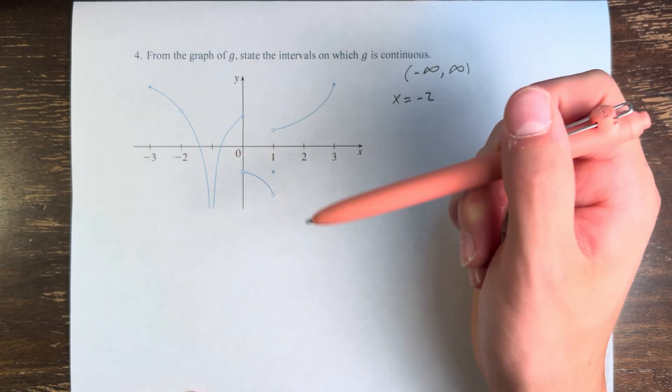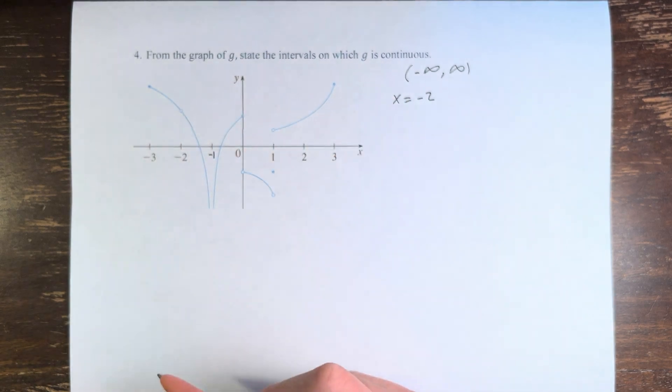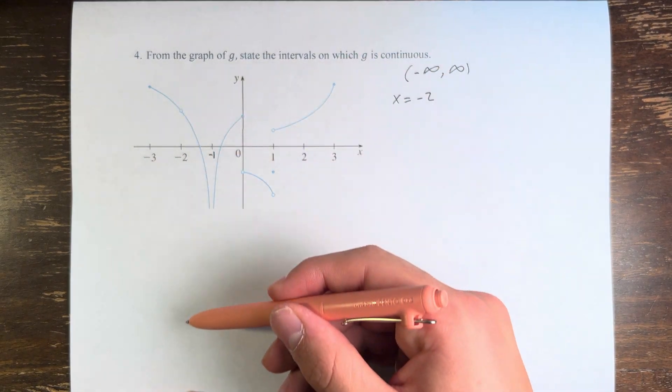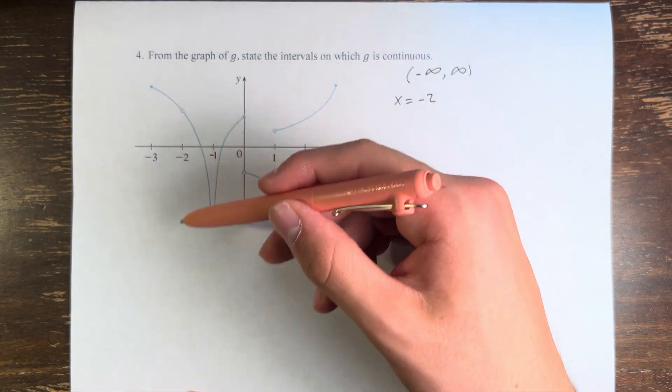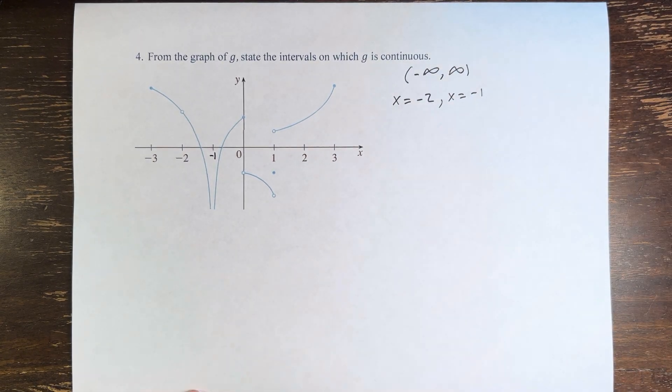At x equals negative 1, you can see the function is going off to negative infinity, and in fact there is no value where the function exists. Therefore, at x equals negative 1, we also have a discontinuity.